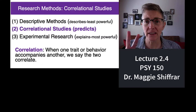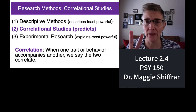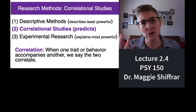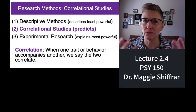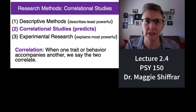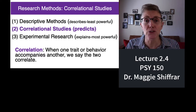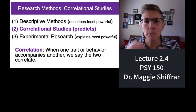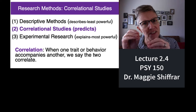In the past two mini lectures we talked about descriptive techniques. Now we're going to shift gears and talk about correlational studies. We say that two variables correlate with one another when they move together in some way. For example, hot temperatures correlate with the months of August, September, and October here in LA. Large shoe sizes correlate with tall heights — two variables that accompany one another.